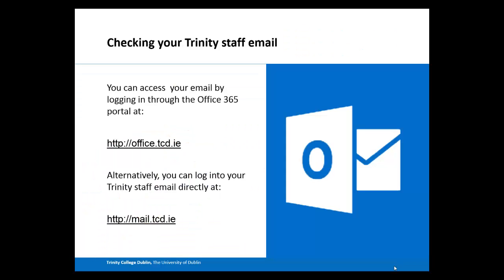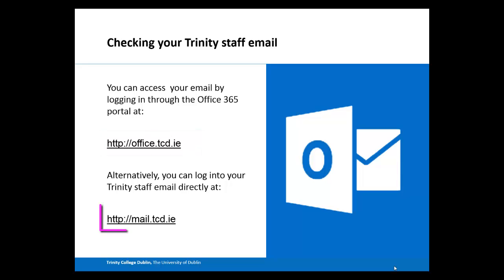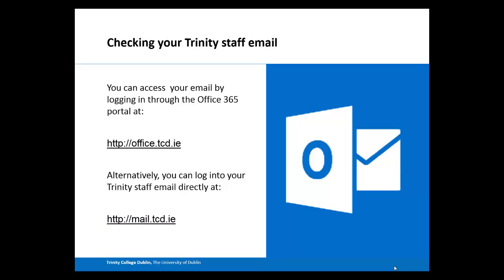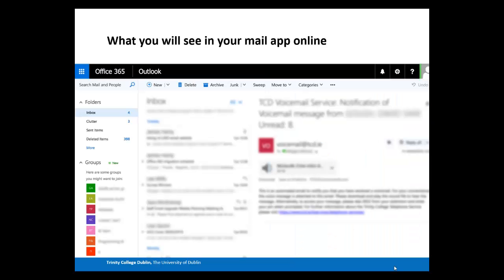Beginning with your email, you now have two ways that you can get your email. You can either log in through the Office portal at office.tcd.ie and select the Mail app, or you can go directly to your email by logging in at mail.tcd.ie. Once there, you'll see that Mail within Office 365 is very similar to Mail in Outlook or Entourage on your desktop. You have a search box so that you can search all of your folders, contacts and messages.